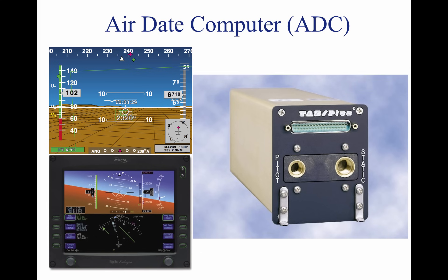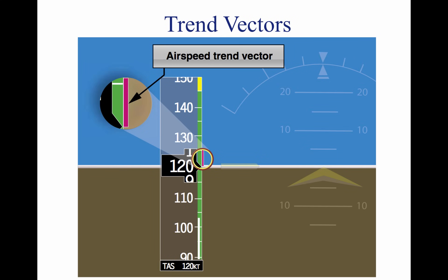The ADC is a separate solid-state device which, in addition to providing data to the PFD, is capable of providing data to the autopilot control system. Trend vectors are magenta lines which move up and down both the ASI and the altimeter. The ADC computes the rate of change and displays the six-second projection of where the aircraft will be. Pilots can utilize the trend vectors to better control the aircraft's attitude. By including the trend vectors in the instrument scan, pilots are able to precisely control airspeed and altitude.